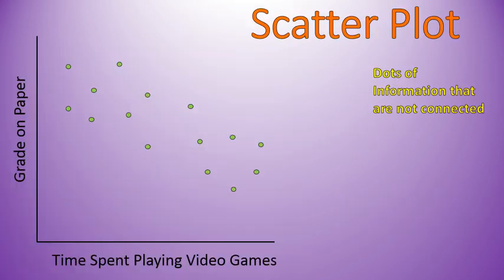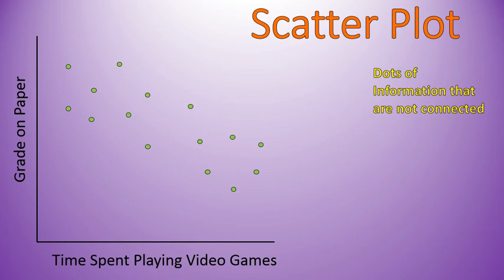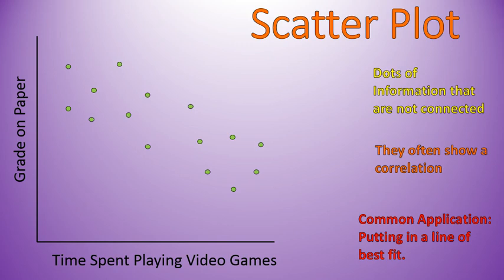Scatterplot — our next one. A scatterplot is a splattering of data that is not connected using lines. You're given just pieces of data from different people. The example I used is the grade you earn on a paper versus the time spent playing video games. You throw all of the information on there and see if there is a correlation. A common application is to put in a line of best fit — like this orange line here — where you want about the same number of dots above and below the line, showing the general trend.